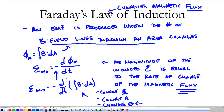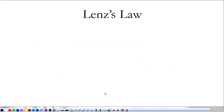It's really easy to take a time derivative of something. What we need to do most of the time is just find out how the flux is changing. We'll look at that in some examples in tomorrow night's video. What we're going to look at now is what this negative sign is all about.